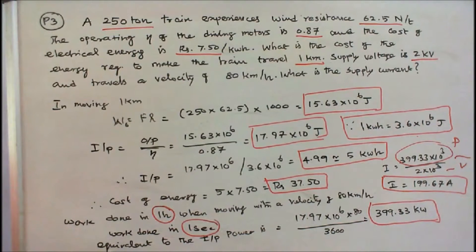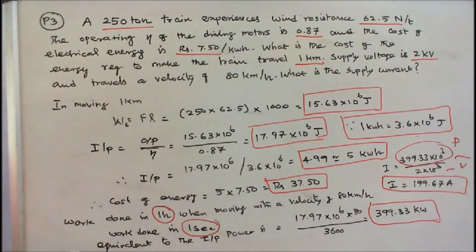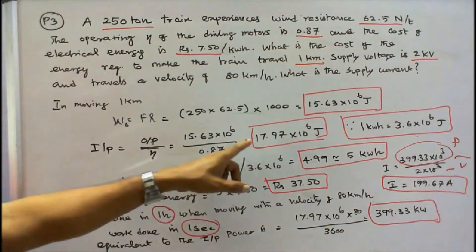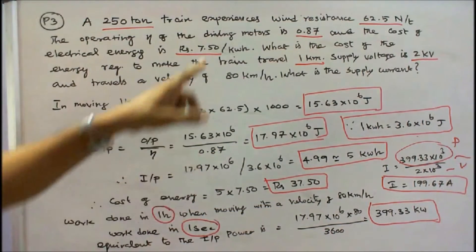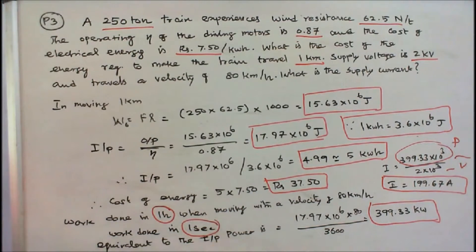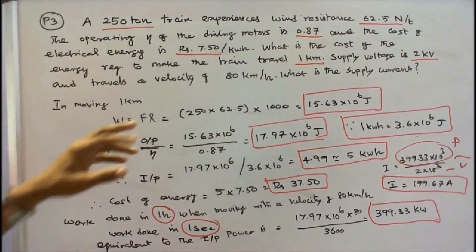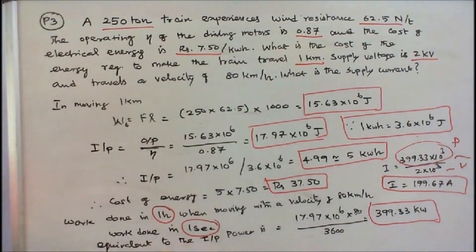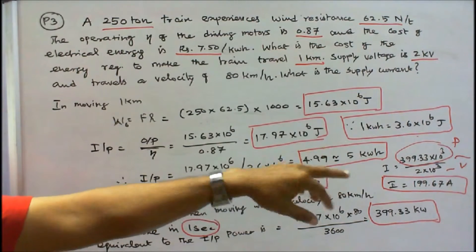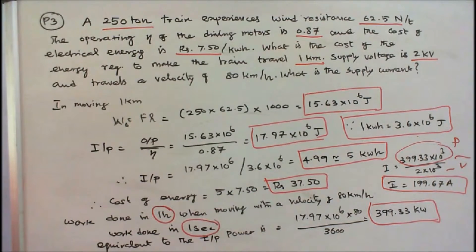Next we find the supply current. Work done in 1 second equals the input power. The train moves at 80 km/h, so input power is 17.97 into 10⁶ into 80 divided by 3600, giving 399.33 kW. With supply voltage of 2 kV, the supply current I is 399.33 into 10³ divided by 2 into 10³, equal to 199.67 Amps.